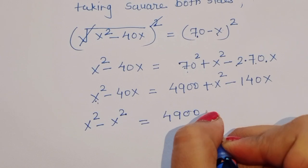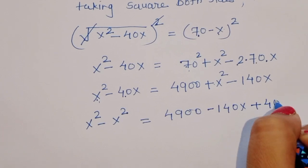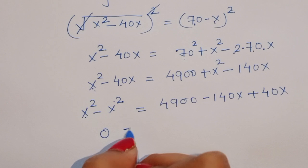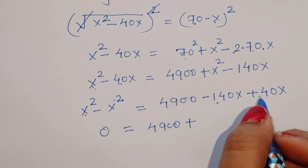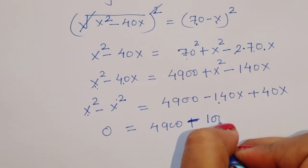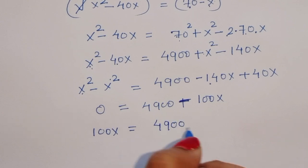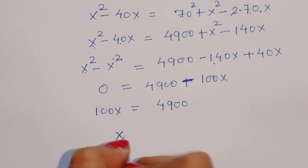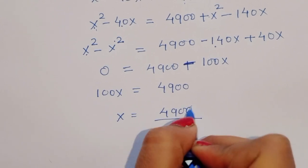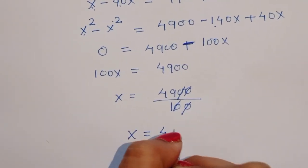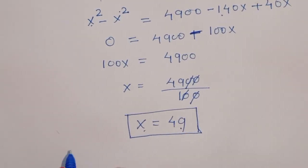x squared minus x squared equals 0, so 0 equals 4900 minus 140x plus 40x, which gives 0 equals 4900 minus 100x. Therefore 100x equals 4900, and x equals 4900 divided by 100, so x equals 49. Now let's verify this value of x.